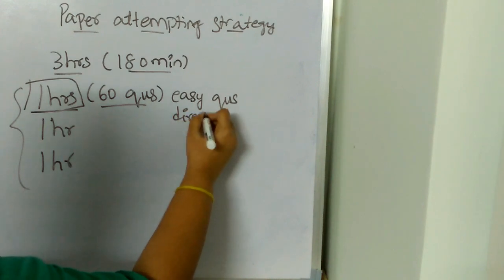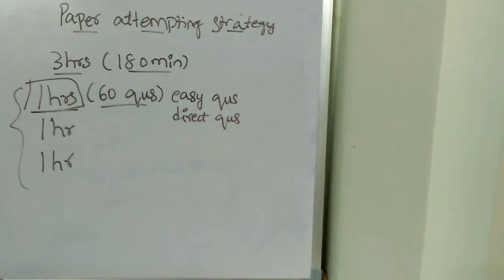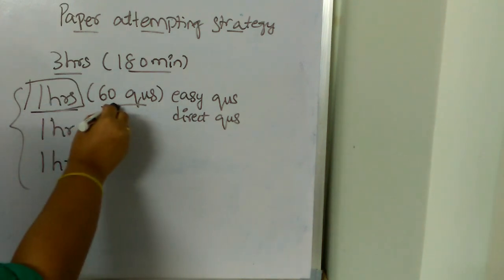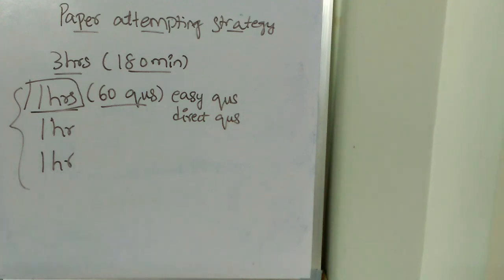Direct questions. Easy questions means the questions which you know very well, concentrate on them. And direct questions means once you read the question you will directly get to know the answer. So those kind of questions you need to concentrate and solve in this first hour. And in this first hour you need to solve at least 60 questions.